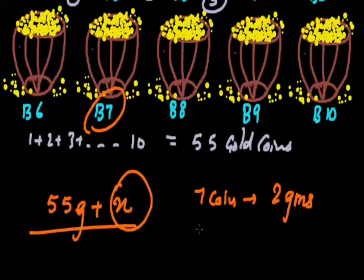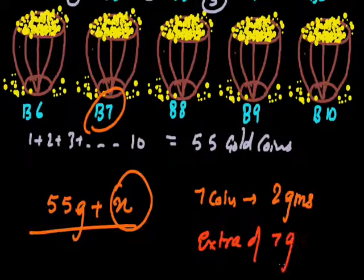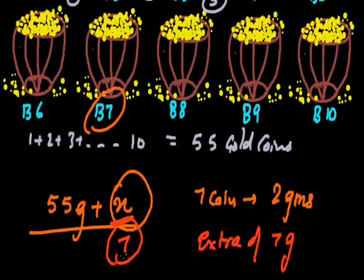Normally a coin weighs 1 gram. B7 being a special one contributes 2 gram coins. So in all it is contributing an extra of 7 grams. 1 gram for the normal and the leftover 1 gram is a special one. It is contributing an extra of 7 grams to the total weight of the coins. And this extra is going to appear here as x.